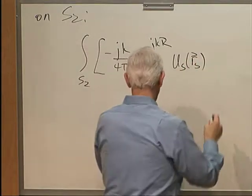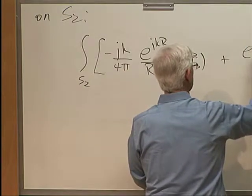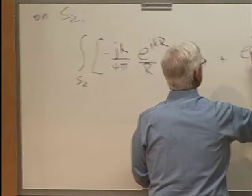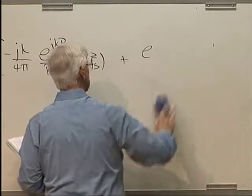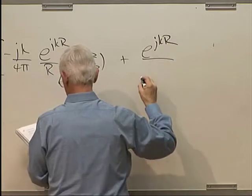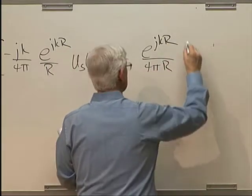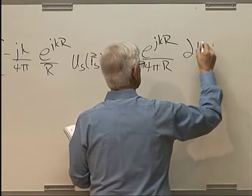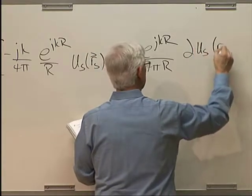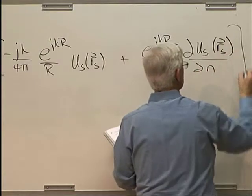Substituting back into the equation, I'm just going to consider that surface integral now, part of the total surface integral, just the integral over S2. Our result here for the partial derivative minus jk over 4 pi e to the jkR over R US of RS. And then we've got two parts of that. E to the jkR over 4 pi R and then partial US of RS with respect to the surface normal.